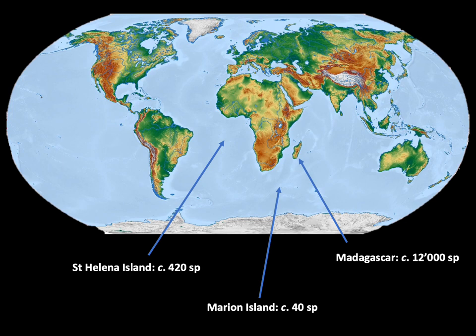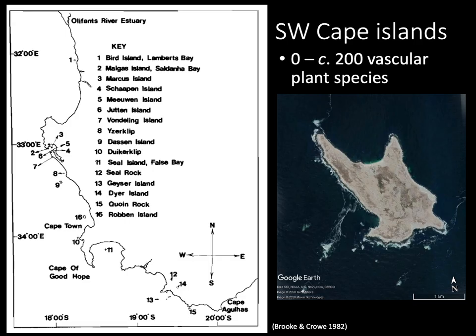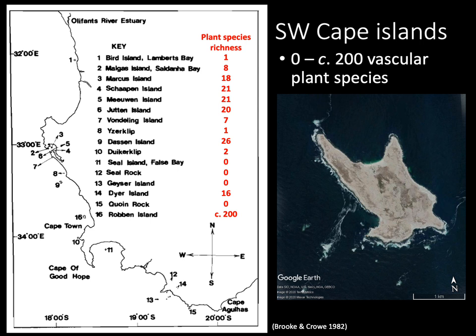Obviously, some of this variation reflects differences in climate and evolutionary history. But we see the same type of variation in species richness even in small areas. We can look, for example, at the 16 islands offshore of South Africa's west coast. The plant species richness varies between 0 and around 200 vascular plant species on these islands, showing lots of variation even within a small area.